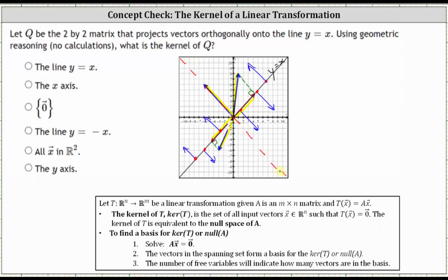So we should be able to recognize the equation of this line would be y equals negative x. Therefore we can say the kernel of Q, or the kernel of the transformation, is equal to the line y equals negative x. All the vectors on this line are perpendicular to the line y equals x, and therefore when projected orthogonally onto the line y equals x, we would get the zero vector.